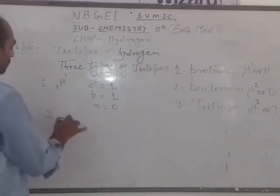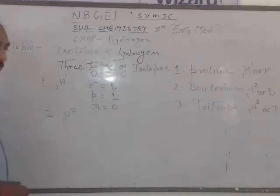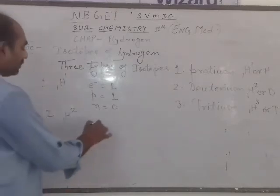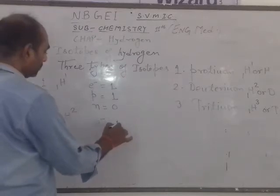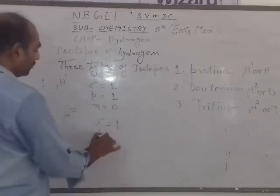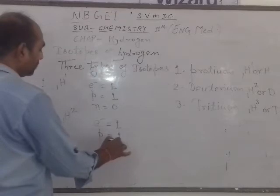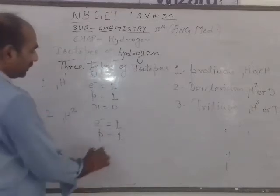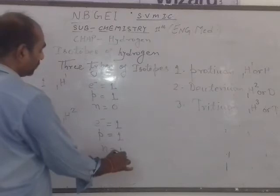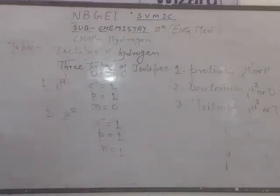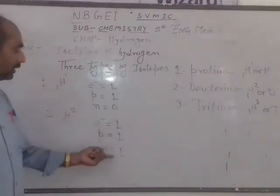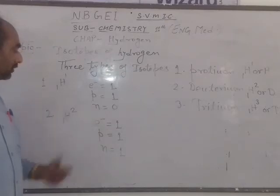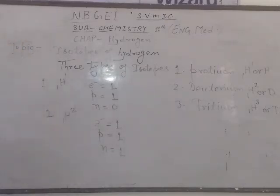Second, deuterium — 1H2. The number of electrons in deuterium is 1. The number of protons in deuterium is also 1. And the number of neutrons in deuterium is 1. One proton and 1 neutron are situated in the nucleus, and 1 electron revolves in orbit.